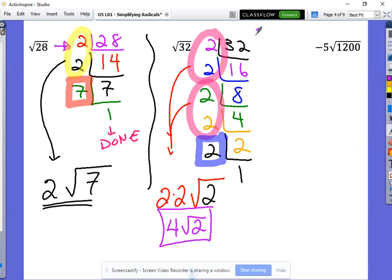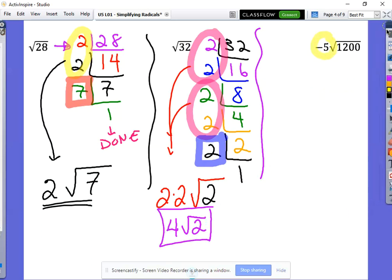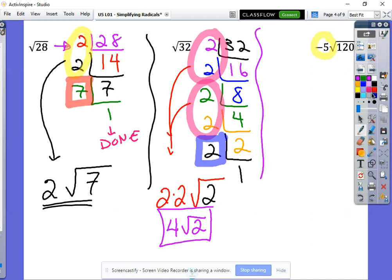All right. Last question here. This is a little bit different because we have this negative five hanging out out front. And that negative five throws a lot of people off. But really, it can just, it really just hangs out there the entire time. So kind of ignore the fact that it's there for a little bit. And let's do what we do best.